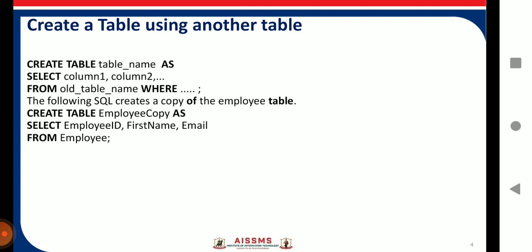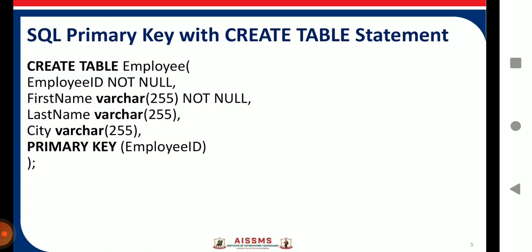In this query, from the existing 'employee' table, I am taking employee_id, first_name, and email — three columns — into the new table 'employee_copy'. To create a primary key with the CREATE TABLE statement, consider this example: CREATE TABLE employee with columns employee_id NOT NULL, first_name, last_name, city, and lastly PRIMARY KEY on employee_id. You can also define the primary key inline in front of the column definition.